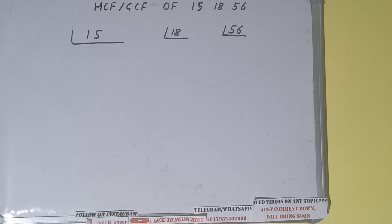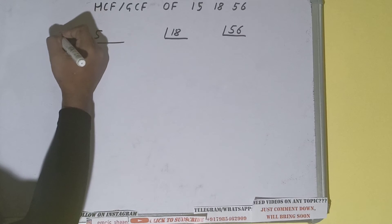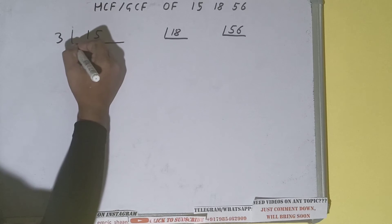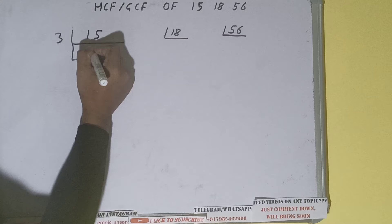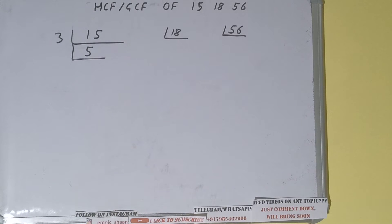We'll start with the lowest prime number, which is 2. Is 15 divisible by 2? Clearly not, because it is an odd number. So we'll go to the next lowest prime number, which is 3. Is 15 divisible by 3? Yes it is, and we'll be having 5.